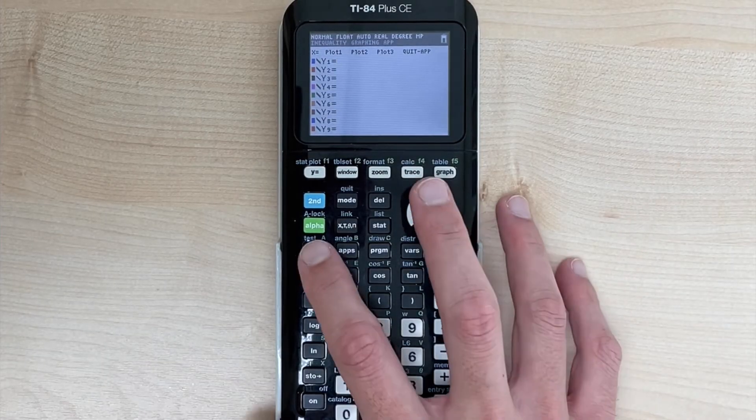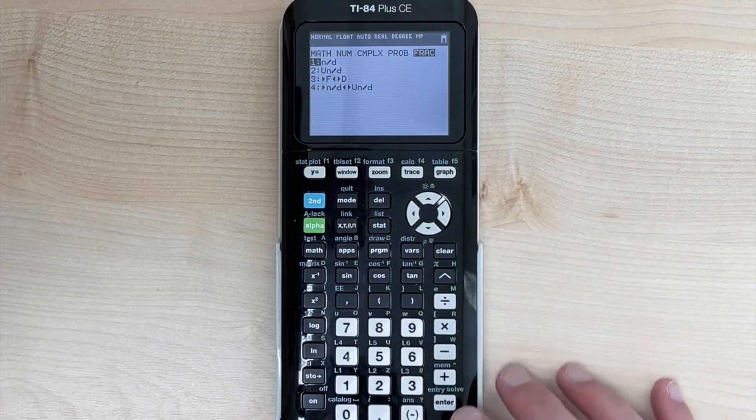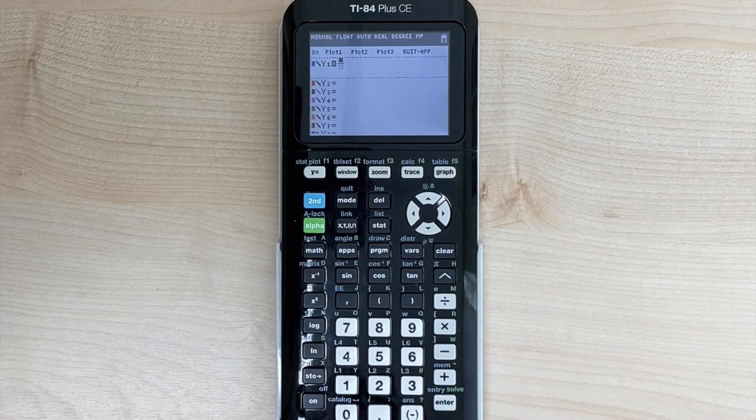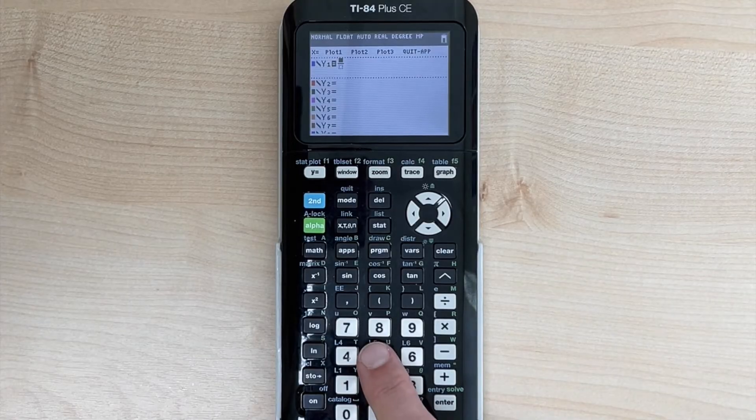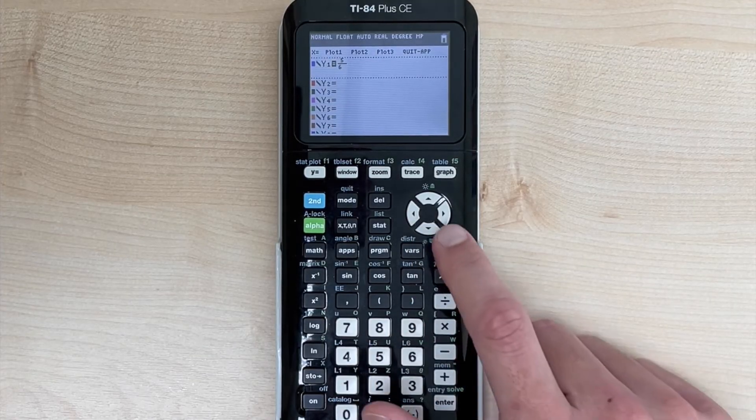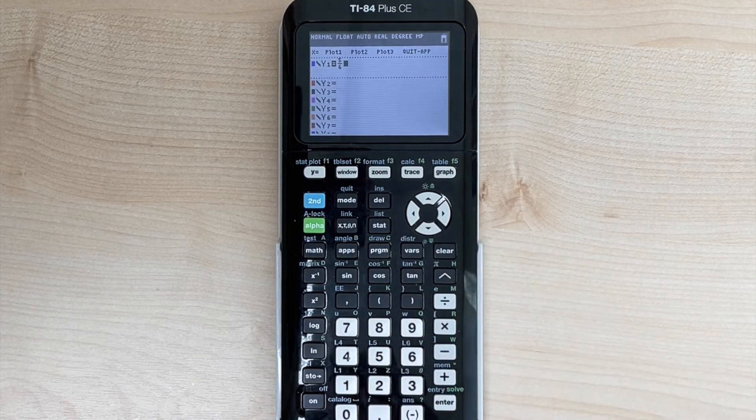So if I wanted to type in y equals five over six x plus two, then I could hit the math key here, go over to fraction, click enter to give me my fraction there. And so now I type in whatever fraction that I want. I hit the right directional key to get out of that.